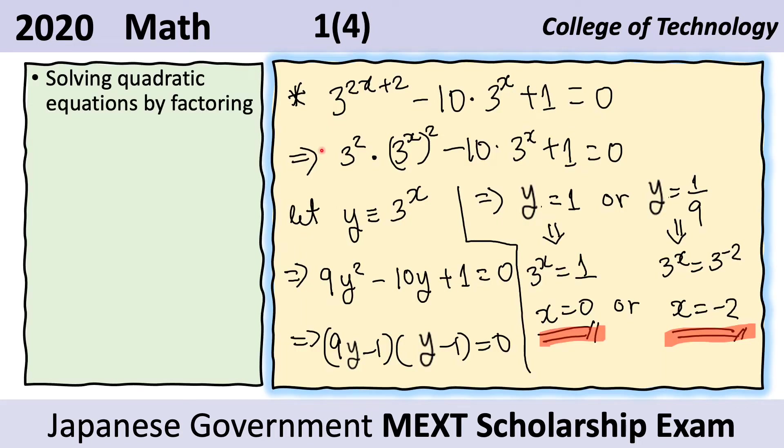This is the given. We use the laws of exponents to separate the 3 to the 2x from the 3 squared. We know that this is a sum, and so that becomes a product here: 3 squared and 3 to the 2x. And 3 to the 2x is equal to 3 to the x squared.